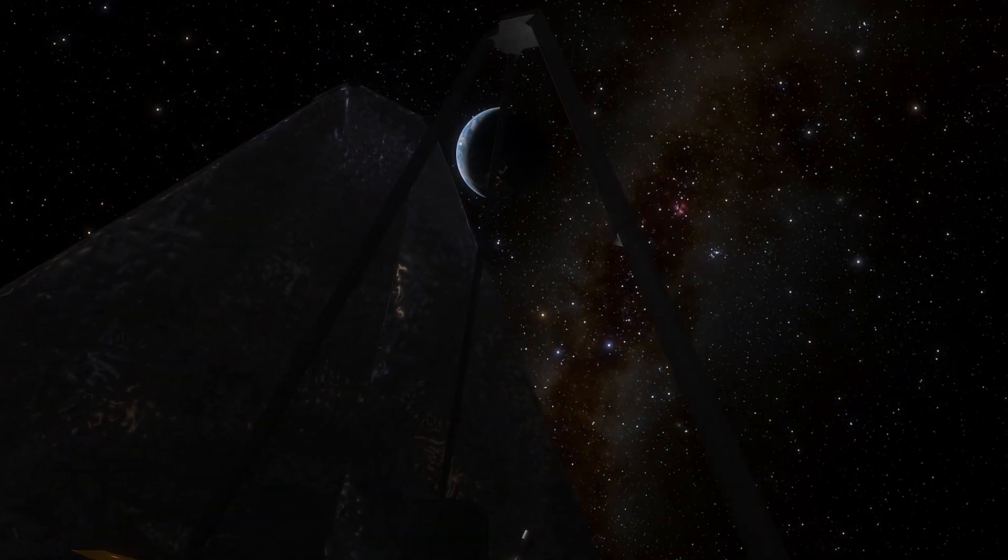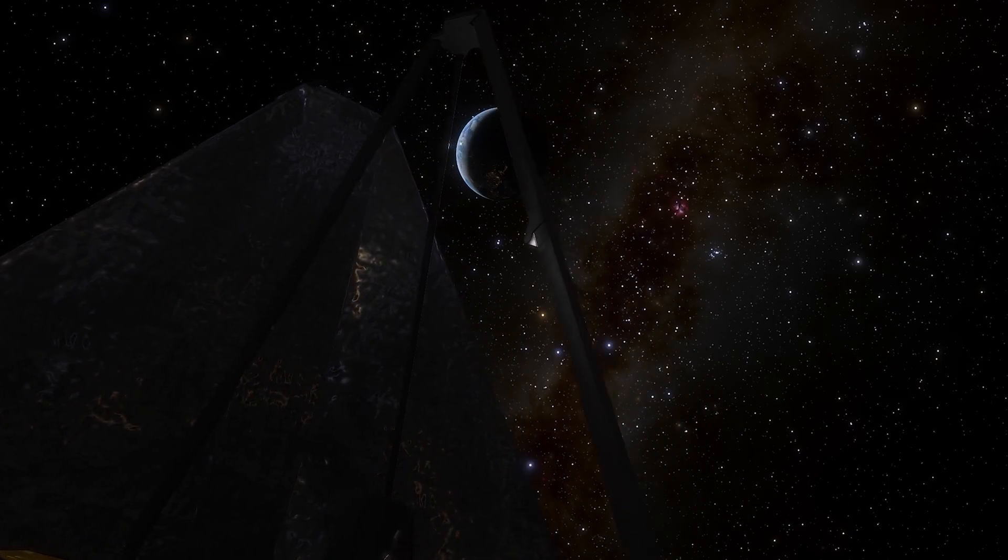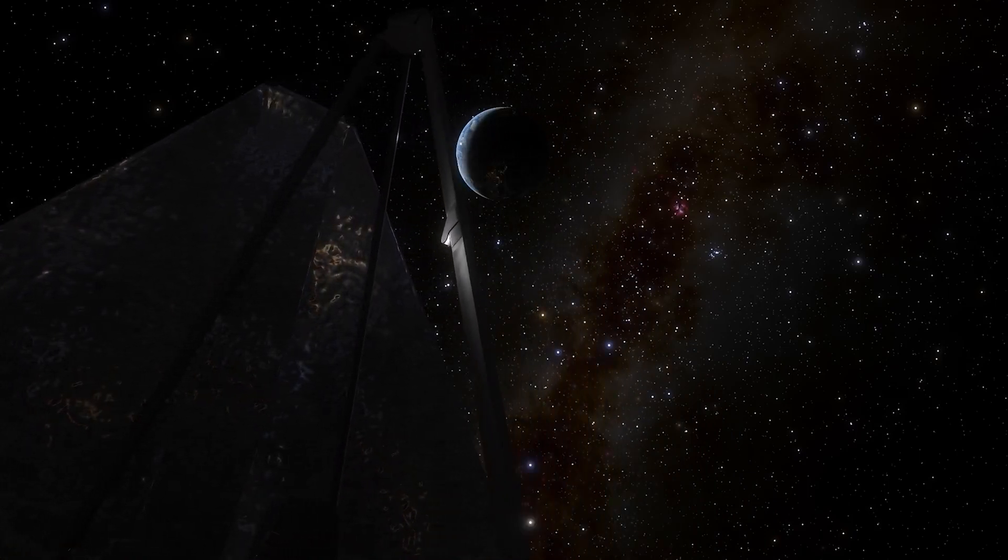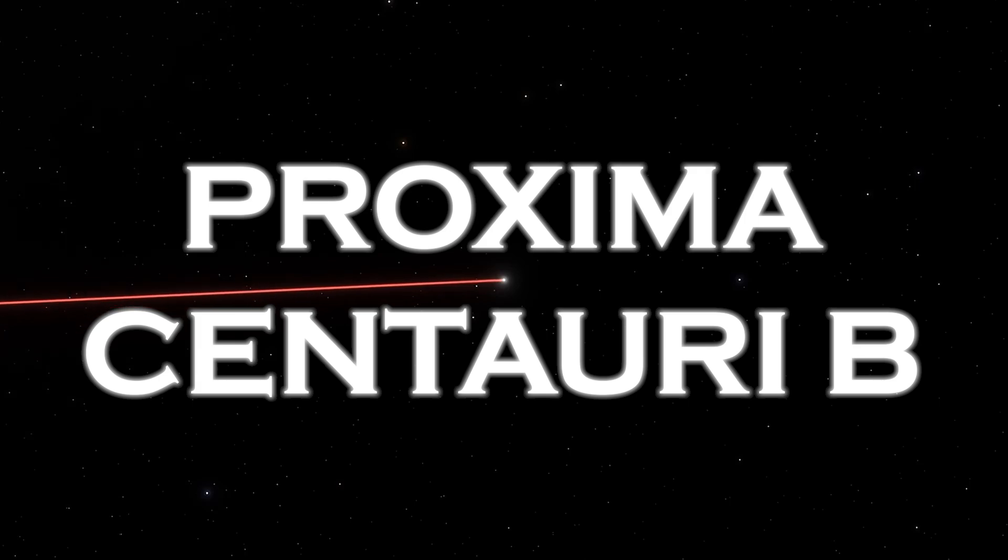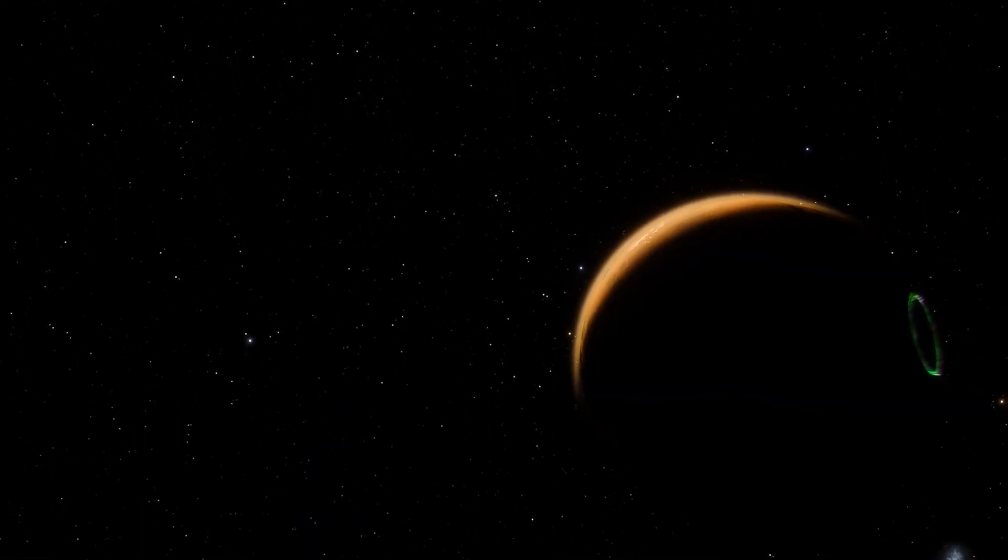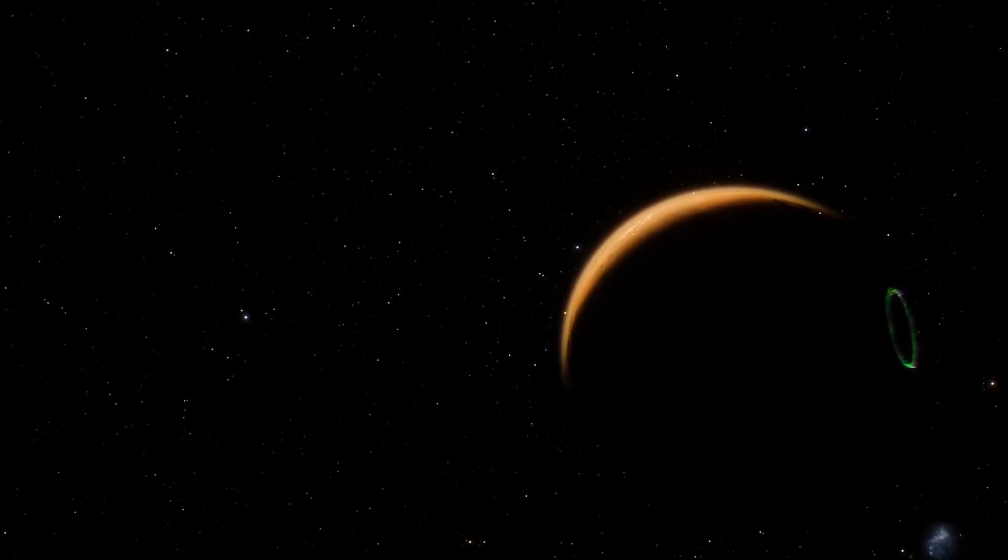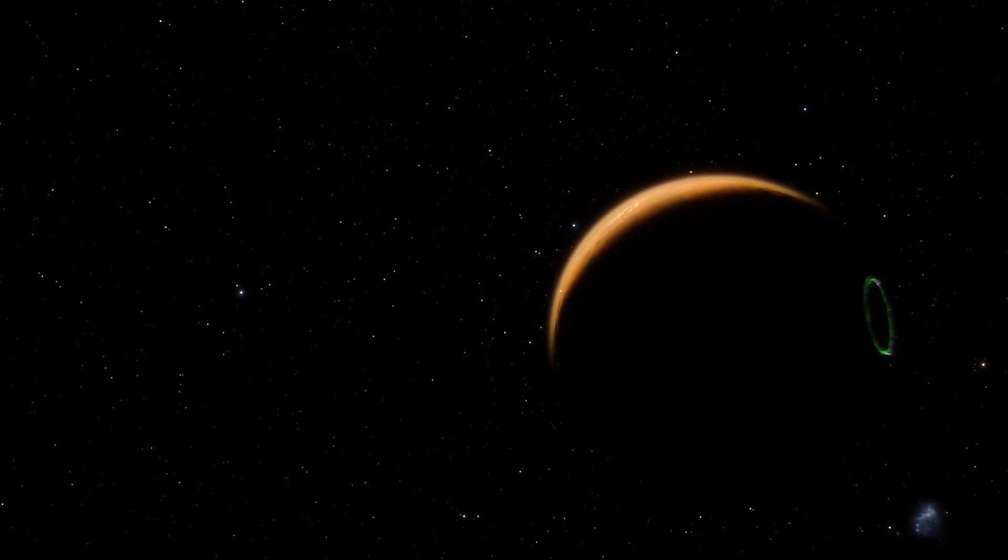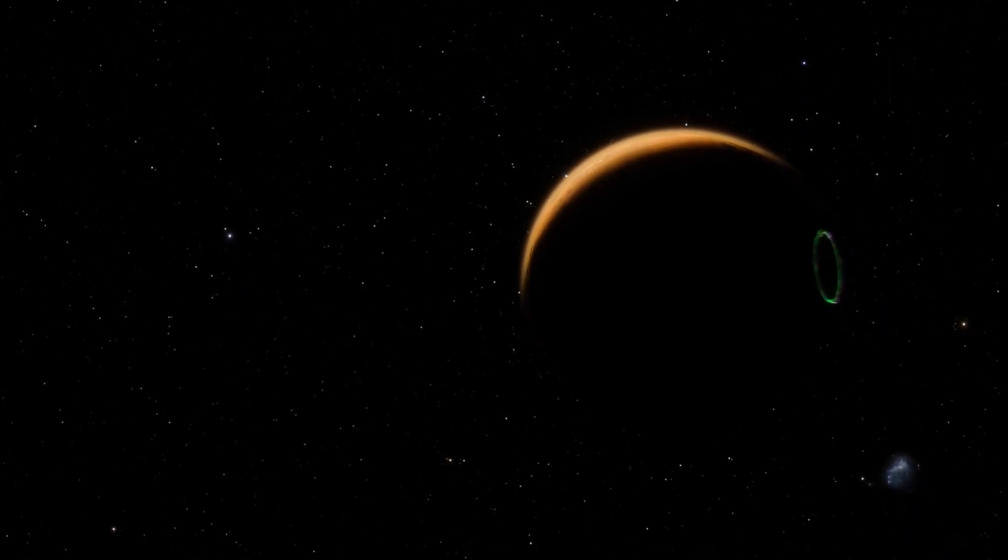While exploring the cosmos and transmitting critical data back to Earth, the telescope observed unique urban lights coming from the exoplanet Proxima Centauri b. These lights, as the name implies, appear to illuminate a distant city.